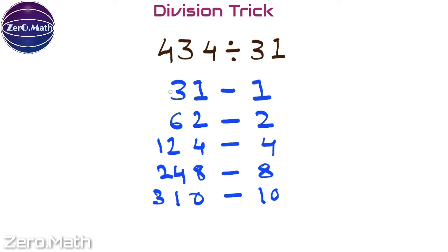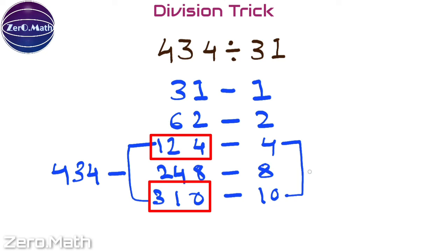Now, what sums up to 434 is what we're going to figure out. 310 plus 124 equals 434, which means 4 plus 10 equals 14, which is our answer.